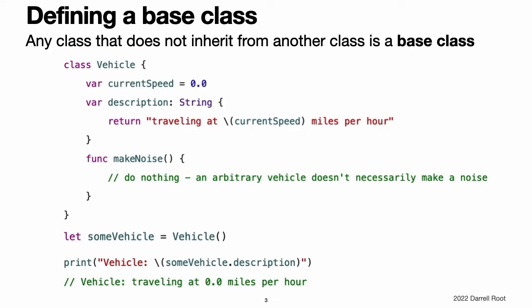Defining a Base Class. Any class that does not inherit from another class is known as a base class. Swift classes do not inherit from a universal base class. Classes you define without specifying a superclass automatically become base classes for you to build upon. The example below defines a base class called Vehicle. This base class defines a stored property called currentSpeed with a default value of 0.0, inferring a property type of Double. The currentSpeed property's value is used by a read-only computed string property called description to create a description of the vehicle. The Vehicle base class also defines a method called makeNoise.